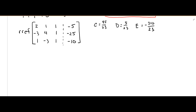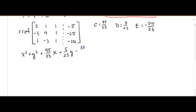This is part two of finding the equation of a circle given three points. We just found C, D, and E, so we can substitute those into our general form. We're going to have x squared plus y squared plus 95/23 x, substituting in C, plus 5/23 y minus 310/23 equals 0.